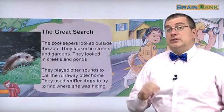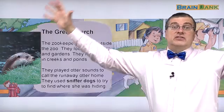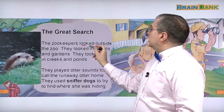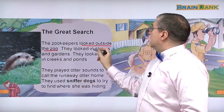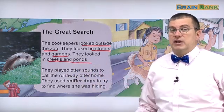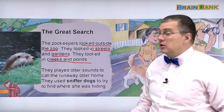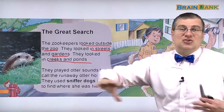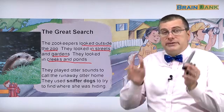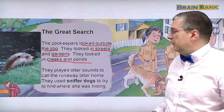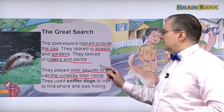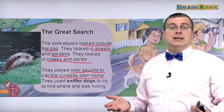The great search. Now it's a big search — not just the zoo. The zookeepers looked outside the zoo. They looked in streets and gardens. They looked in creeks — creeks are like a small stream — and ponds, which are small areas of water. They played otter sounds to call the runaway otter home. They had a recording, like how you can record bird songs on your cell phone and play them back to see if any birds come.